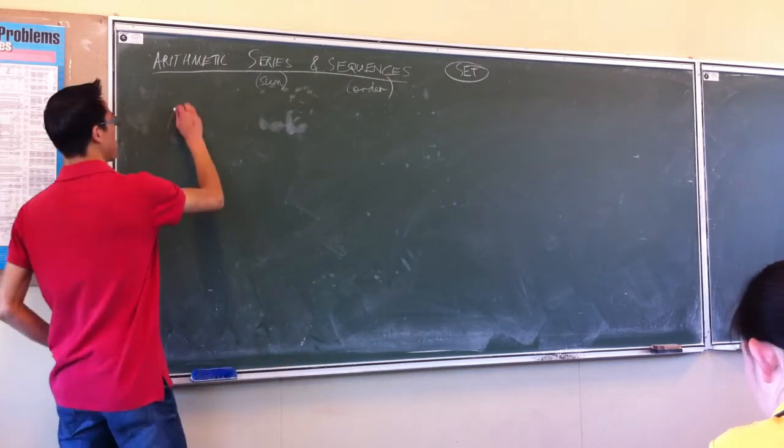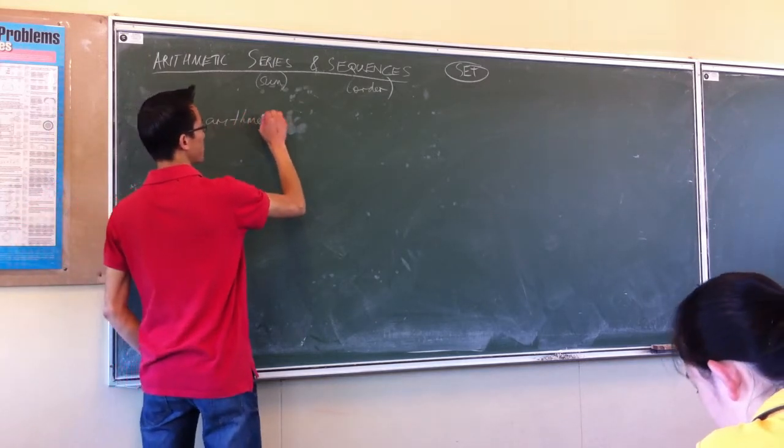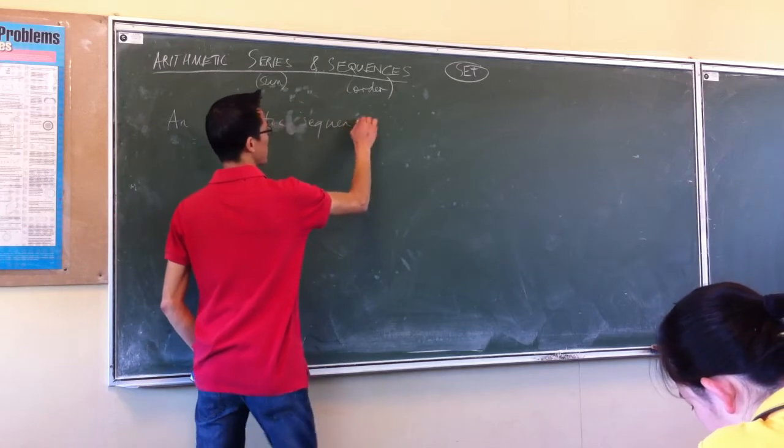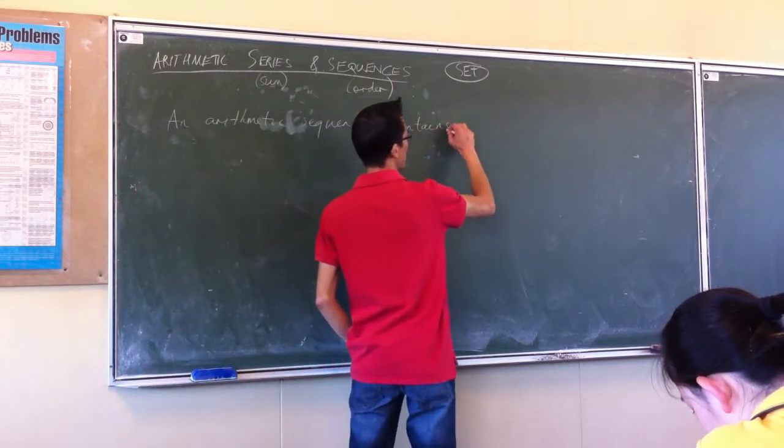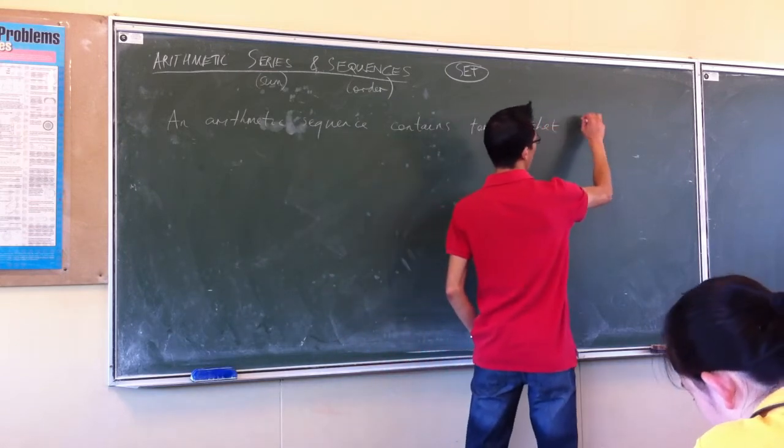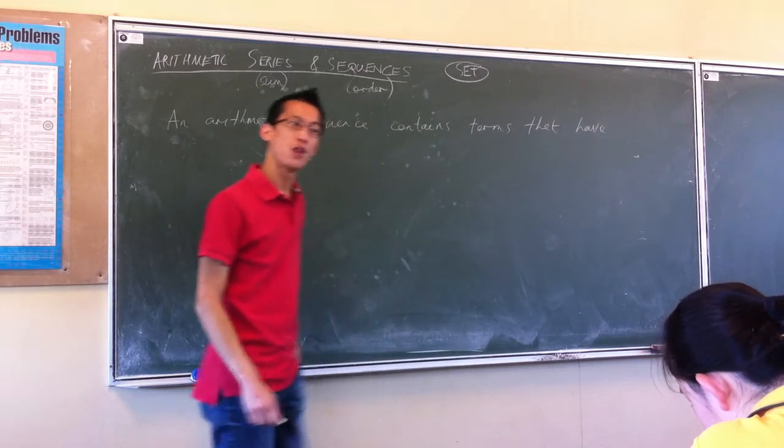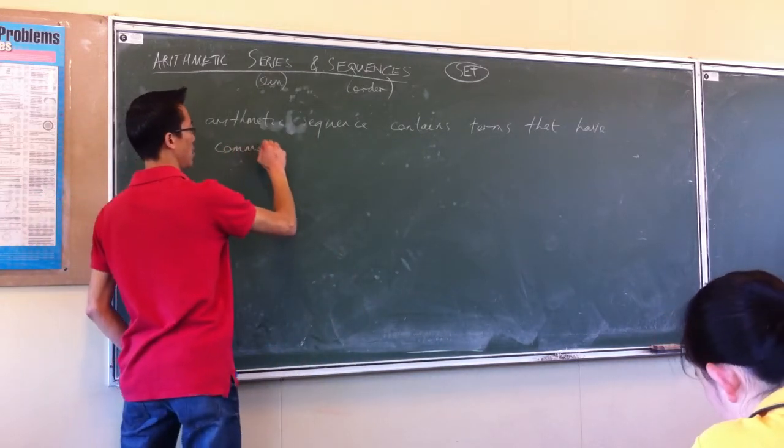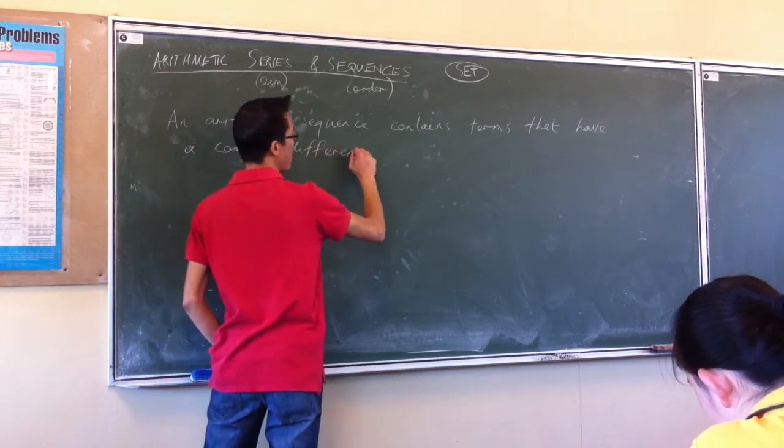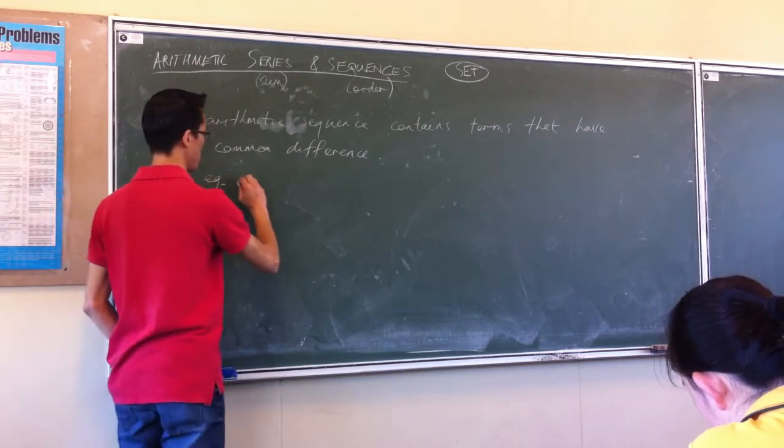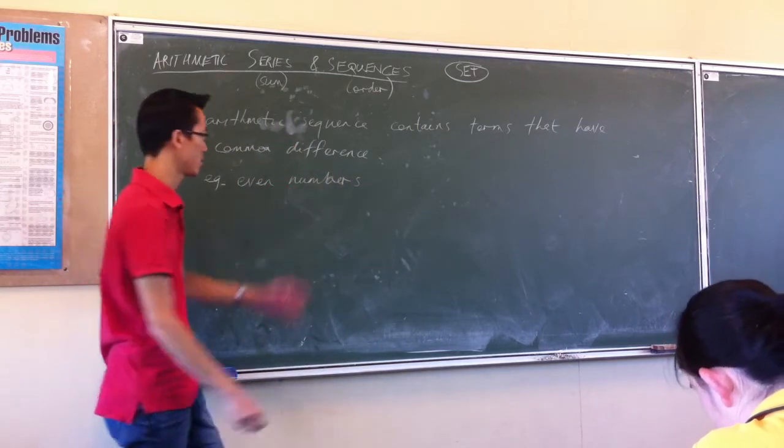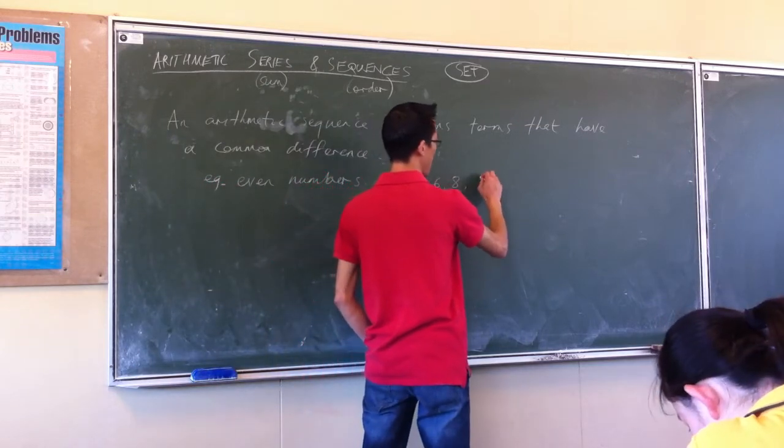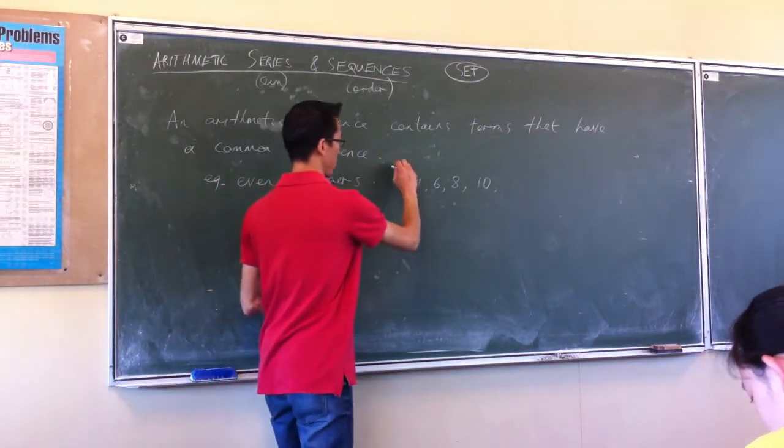So what's an arithmetic sequence? Here's our definition. An arithmetic sequence contains terms that have a common difference. For instance, we've actually already looked at a few arithmetic sequences before. The sequence of even numbers. When you think about how these work, because of how we've defined this sequence, there's a common difference between every term. You can see here, we start at two and our common difference is two.